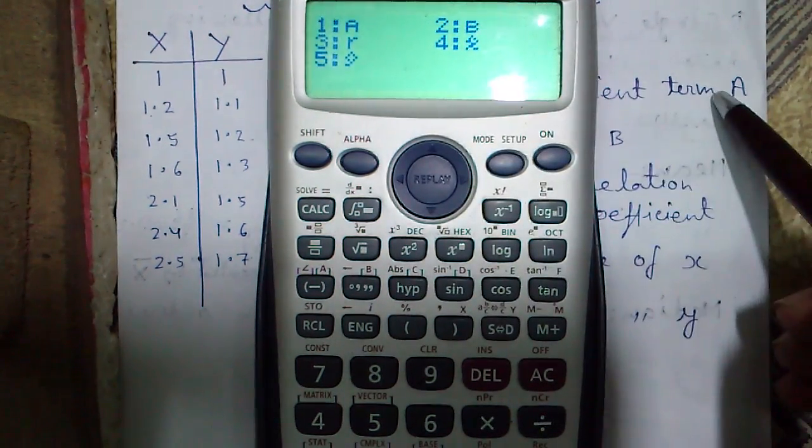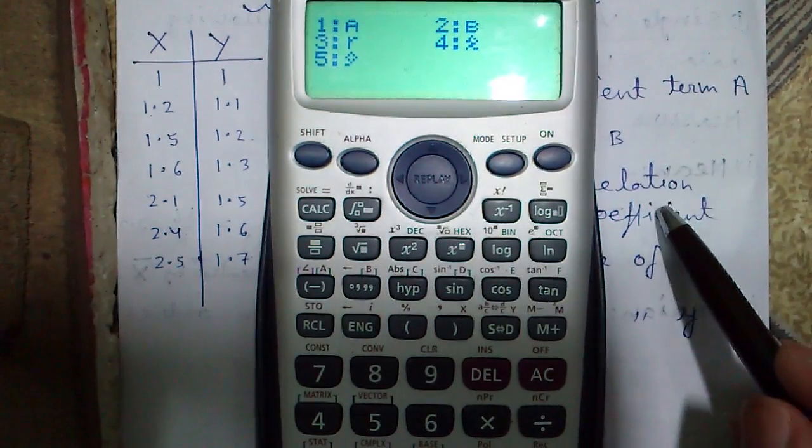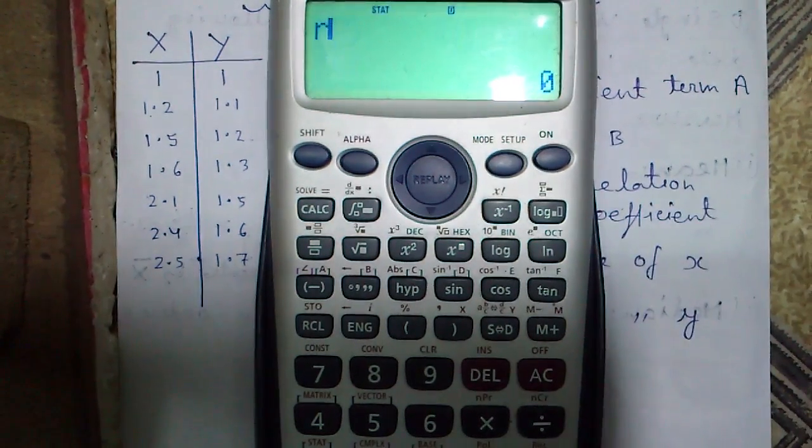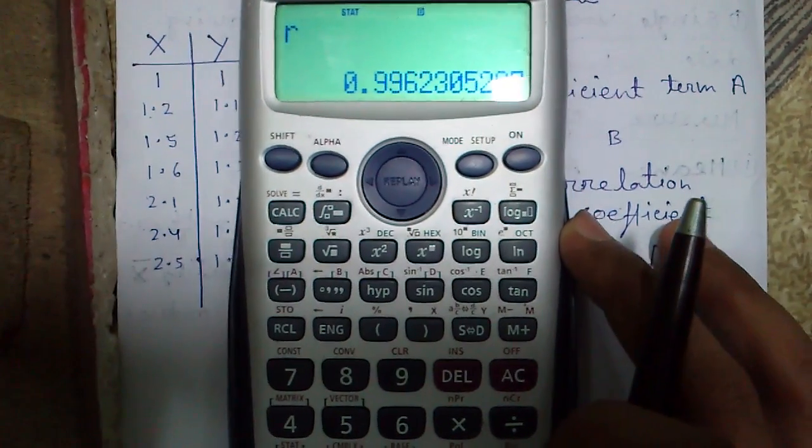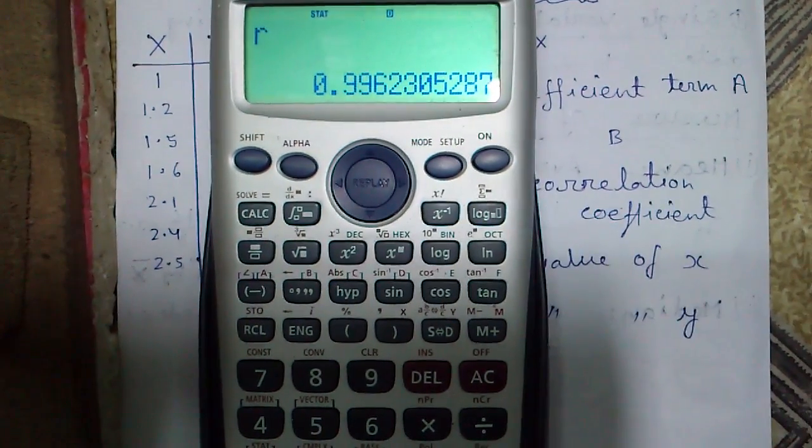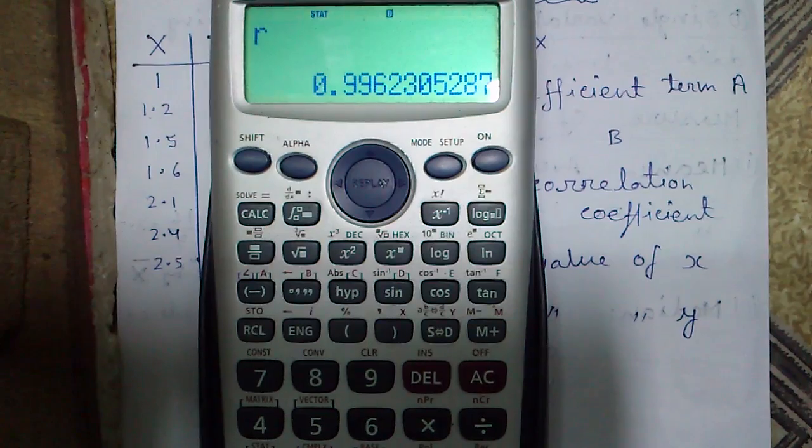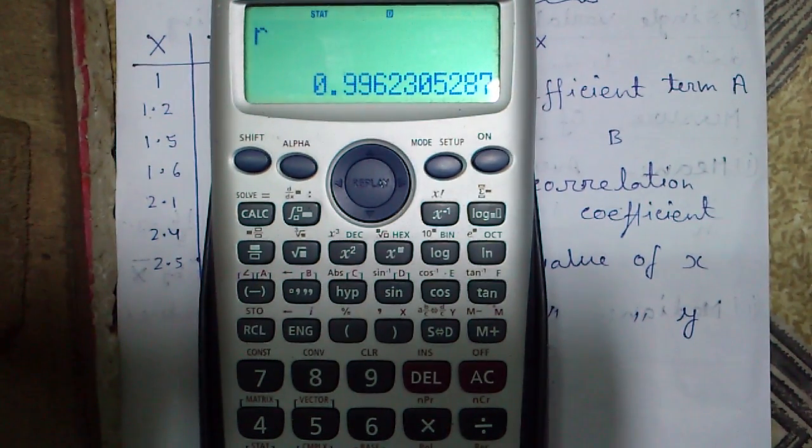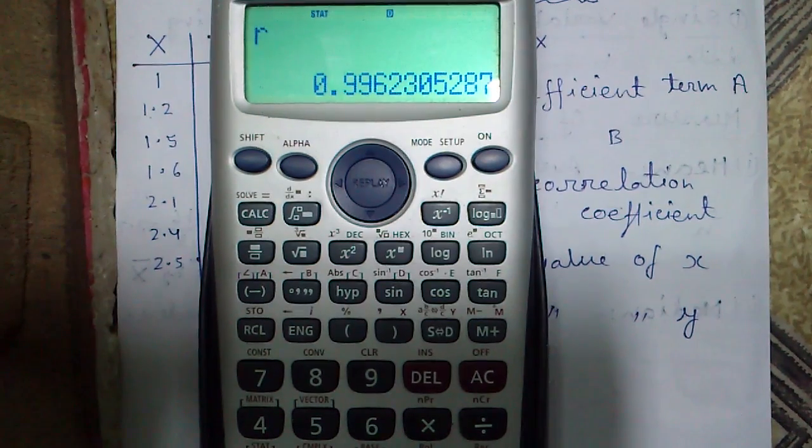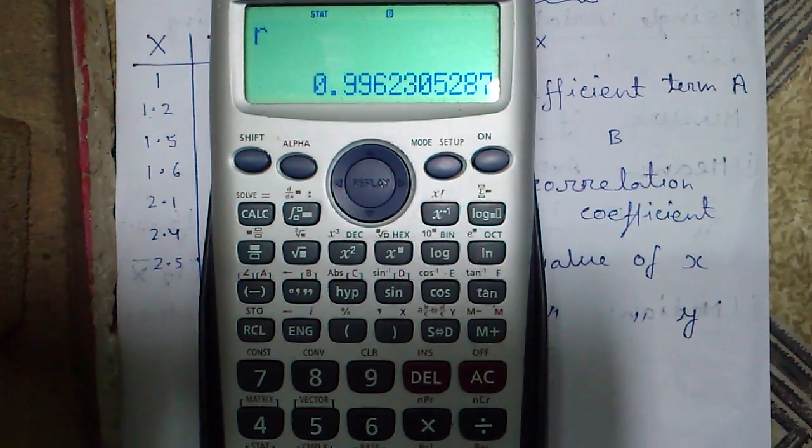a is the coefficient term a, b is the coefficient term b and r is the correlation coefficient. Let's find out r, it is 0.996. The value of r, if more closer to 1, then your approximation of linear regression is accurate. And if the value of r is away from 1 and more closer to 0, then your approximation of linear regression may not be so accurate.